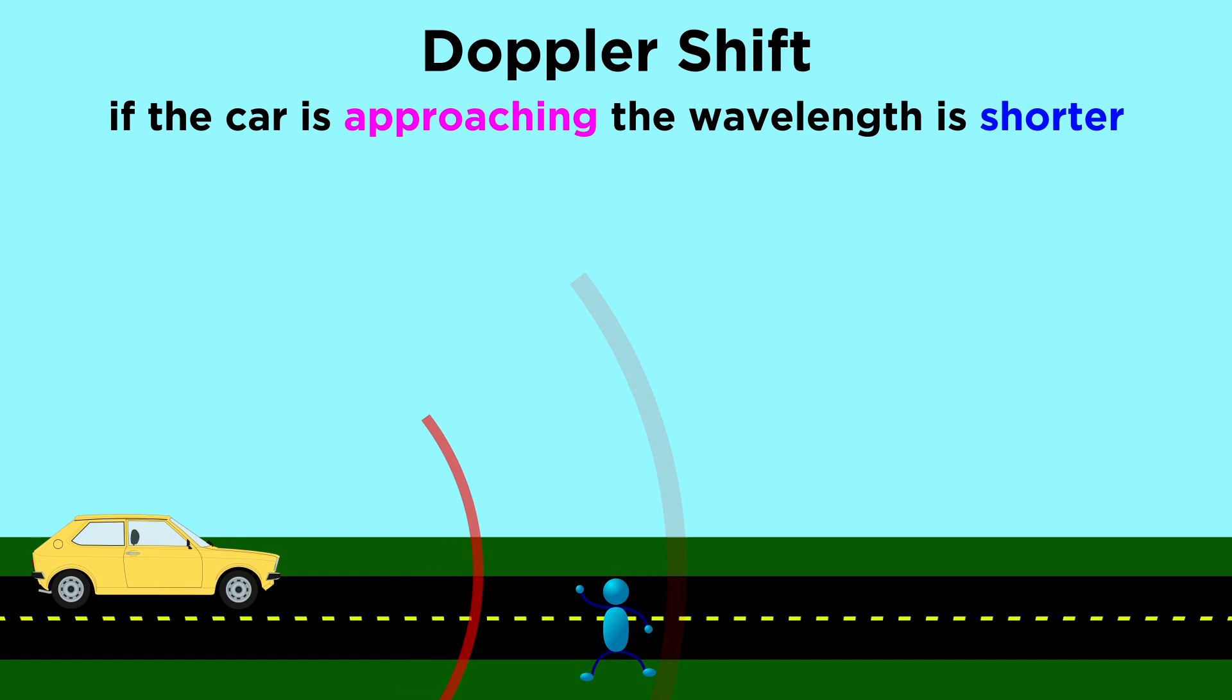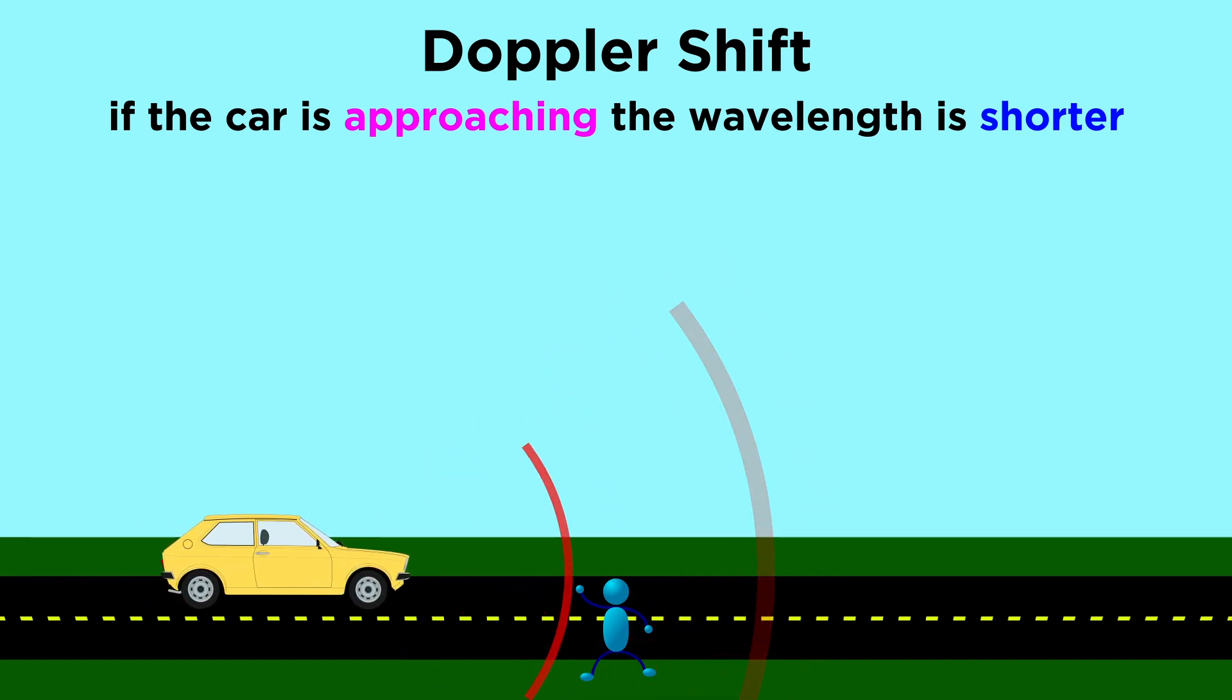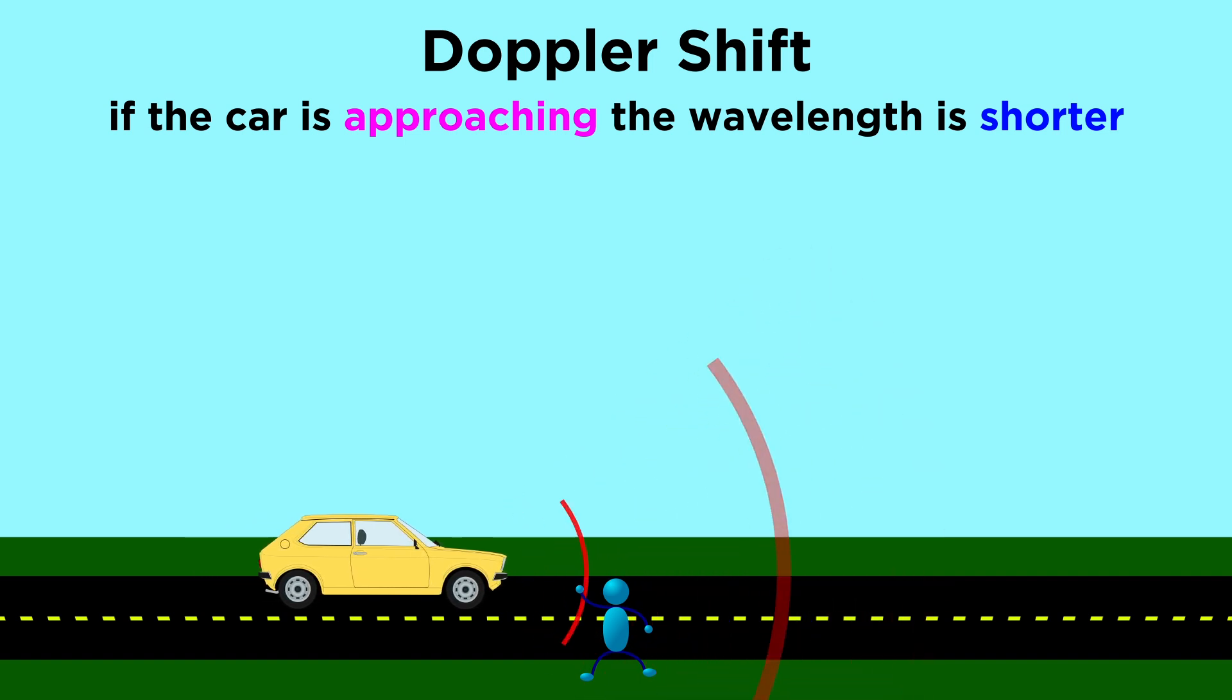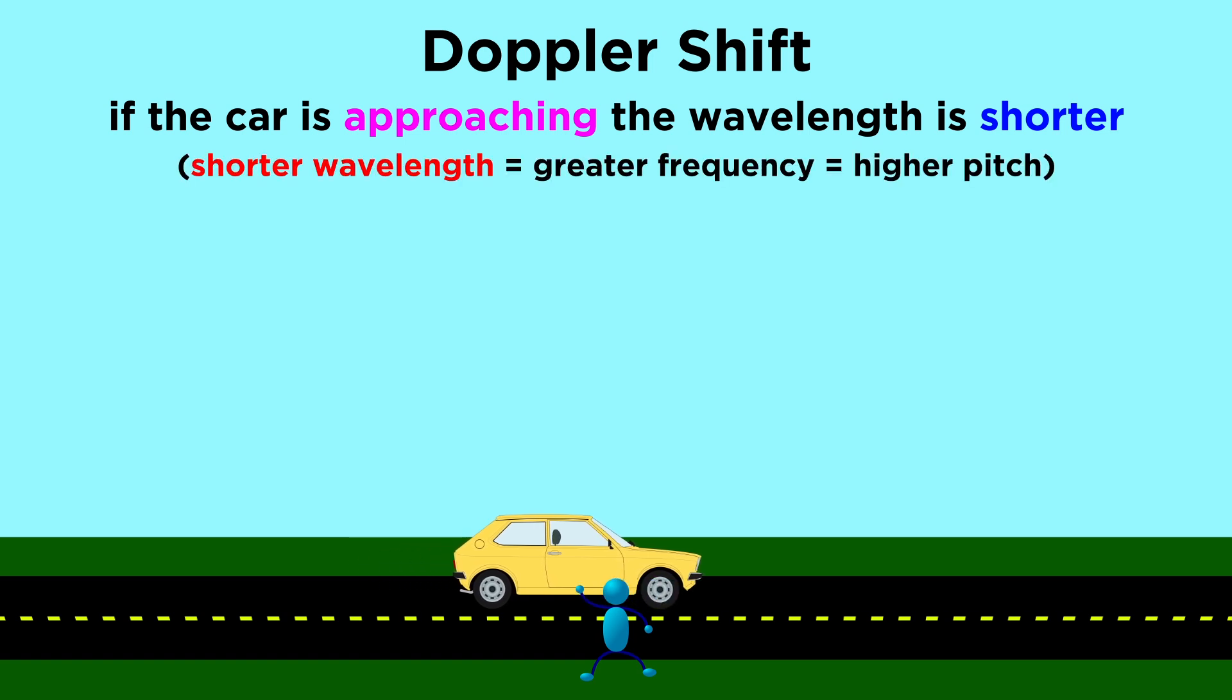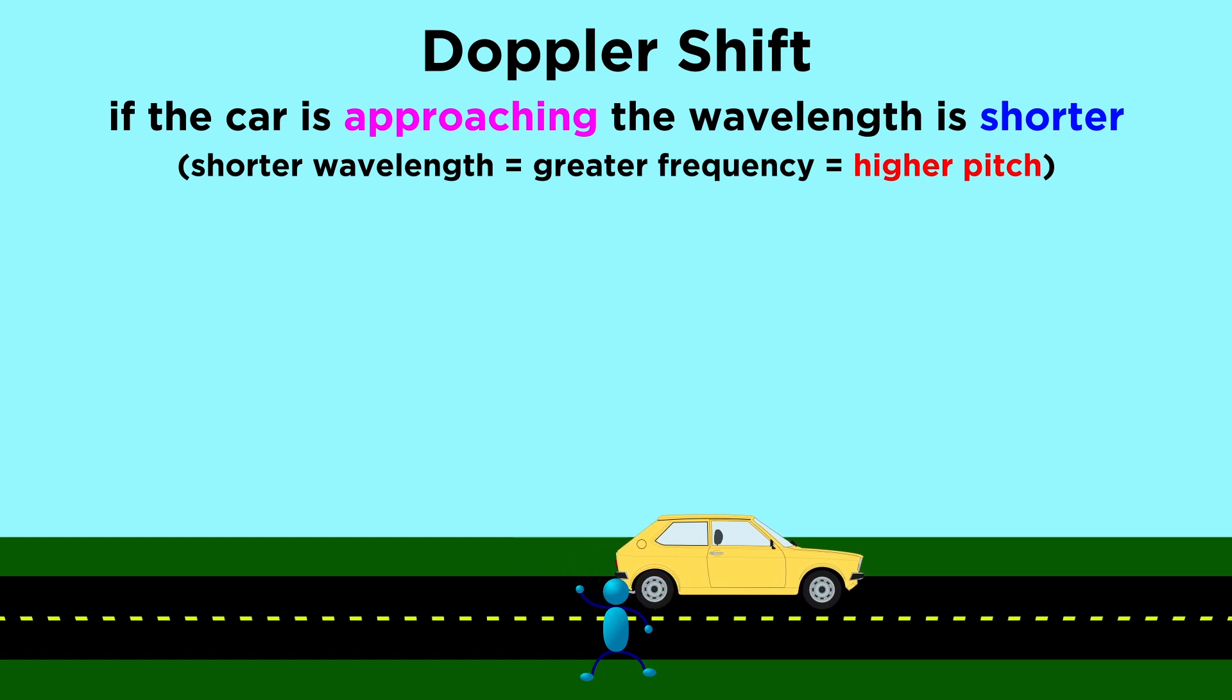When the car is coming towards us, the sound waves will be of a shorter wavelength than if the car was stationary. This is because the car is moving closer to us in between the emission of each wave. If the wavelength is shorter, the frequency is greater, and we will hear the sound as being pitched up.